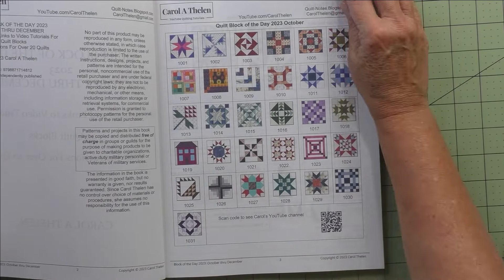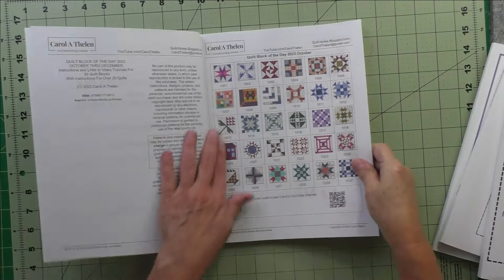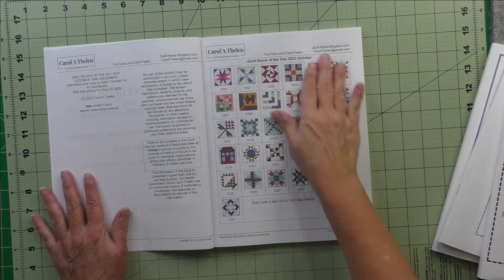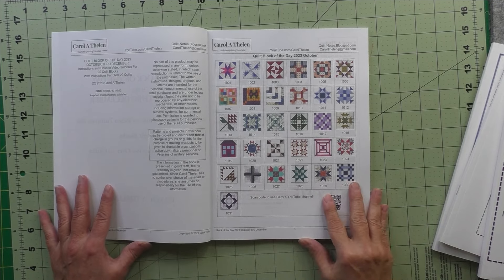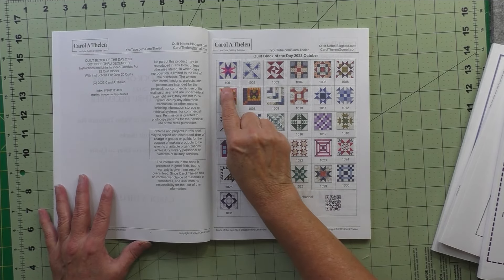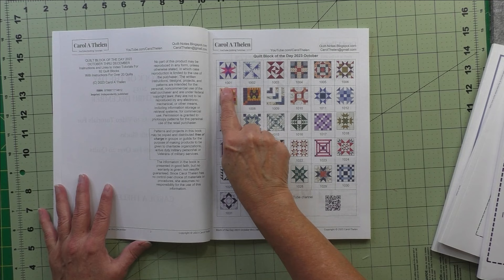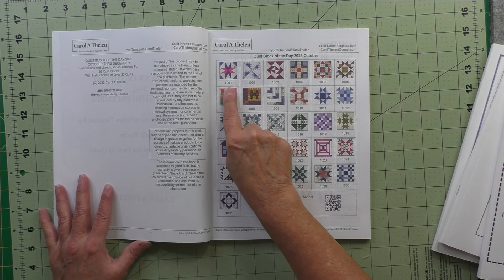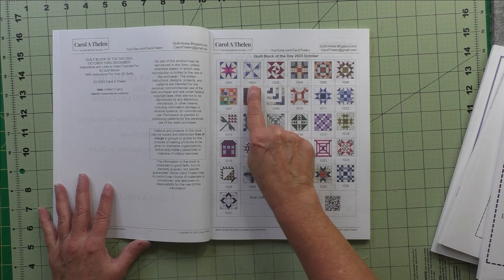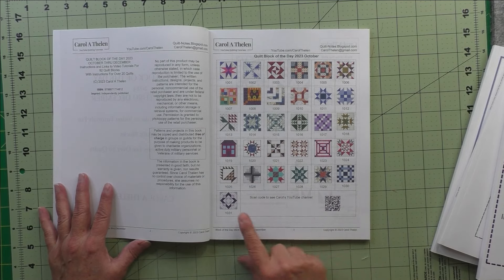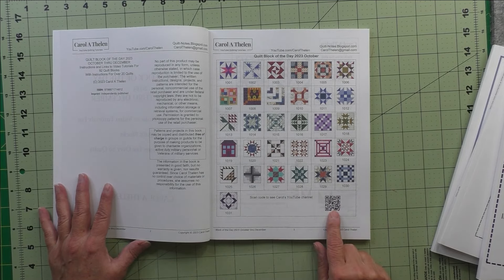I'll just flip through it really quickly. At the beginning of every month I have one page that contains all the blocks for that month and they're numbered the same way we numbered them on the videos. So 1001 is October 1, 1002 is October 2nd, and it goes like that. Here's a code you can scan to go directly to my YouTube channel.